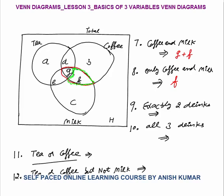Exactly two drinks means D plus E plus F. D are the people who consume only tea and coffee — exactly two drinks. E are the people who consume only tea and milk. F are the people who consume only coffee and milk. So exactly two drinks is D plus E plus F. All three drinks is G, because G are the people who consume tea as well as coffee as well as milk.